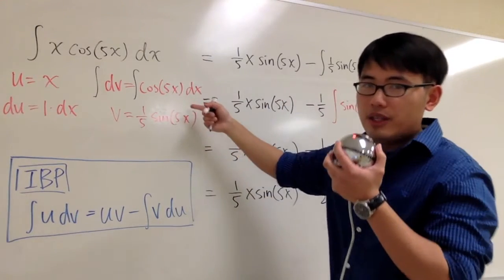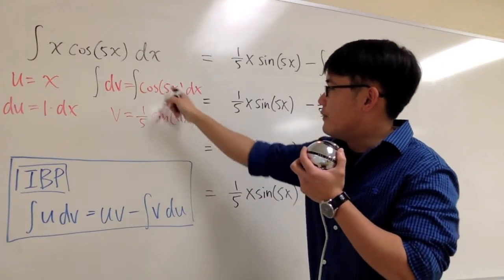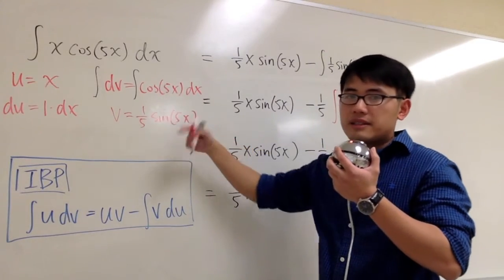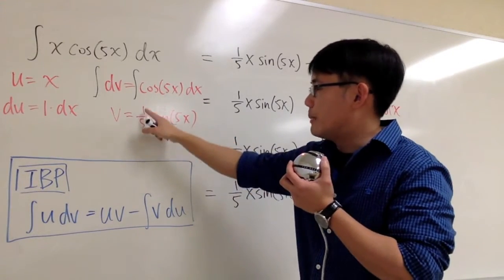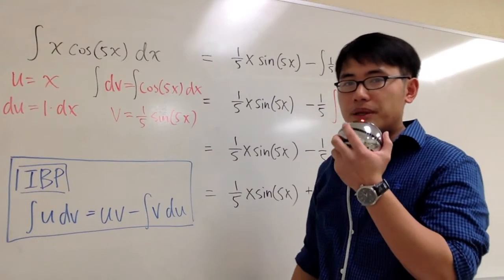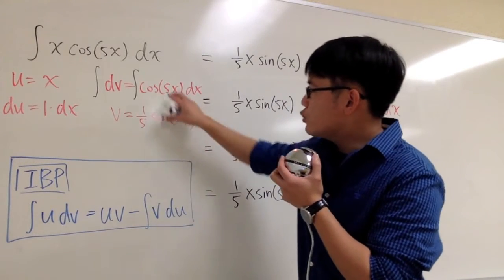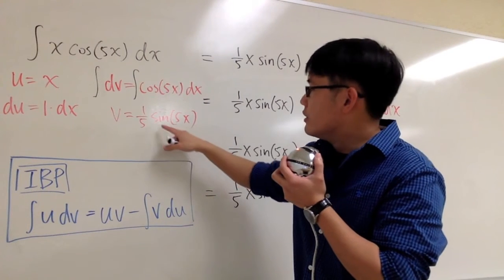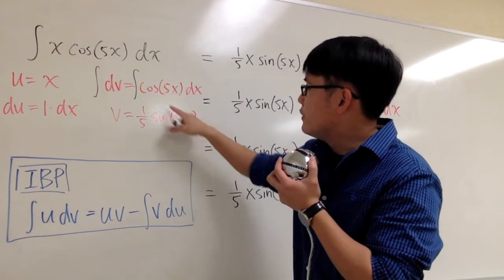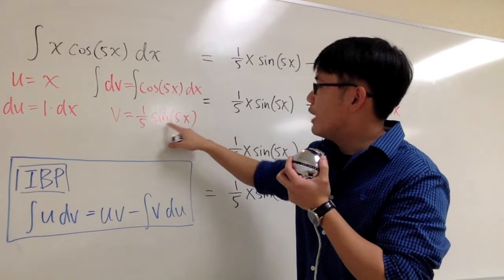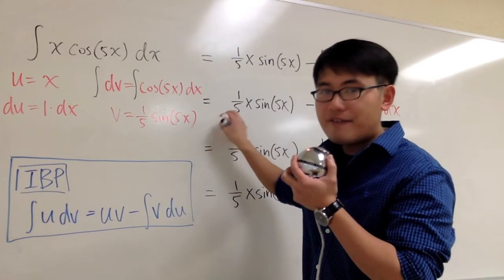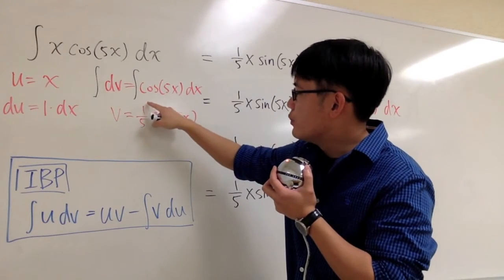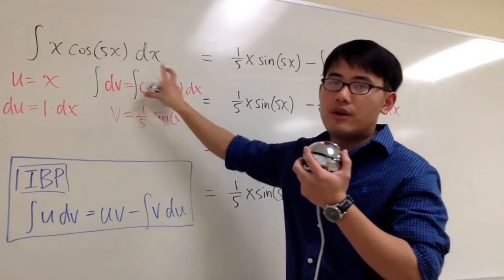This part, technically, we are doing the u substitution for cosine of 5x. You let u is equal to 5x, and then you will see we have to multiply by 1/5 for this. But then, the way I like to do it is, just write down an answer right here, and then differentiate this real quick. The derivative of sine 5x will give you cosine 5x, but then you have to multiply by 5. That 5 will be cancelled out with 1/5, so you have just 1 for that.